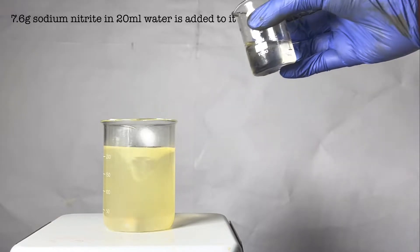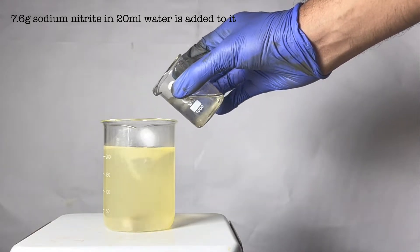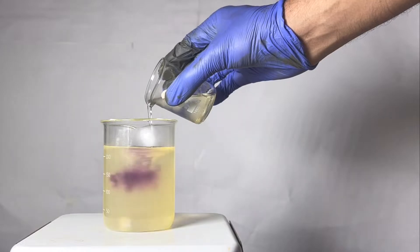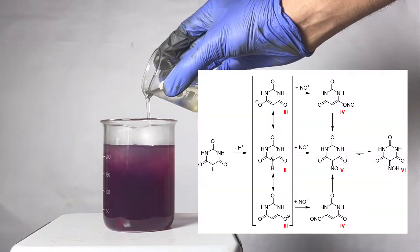Next, a solution of 7.6 grams of sodium nitrite in 20 ml of water was added to it. Immediately the whole solution turns deep purple in color. Sodium violurate synthesis is complete as per the following equation.